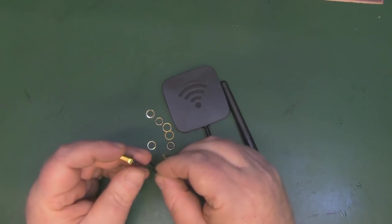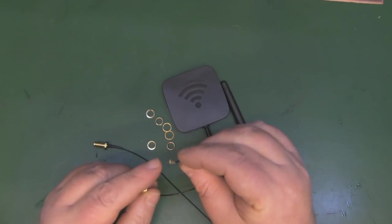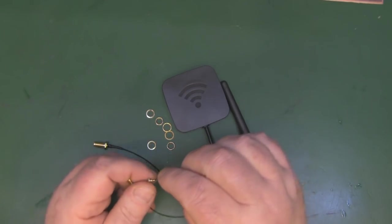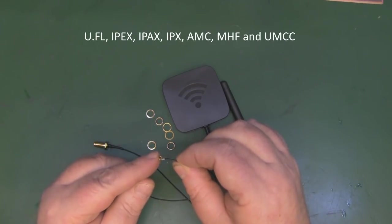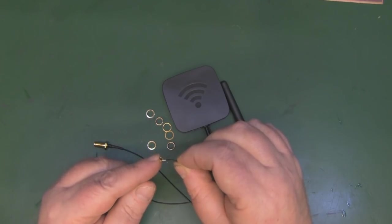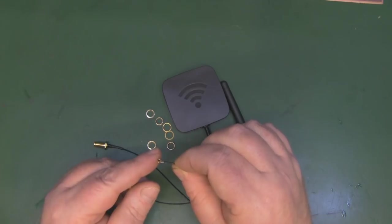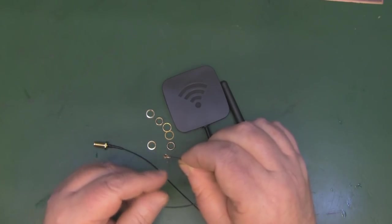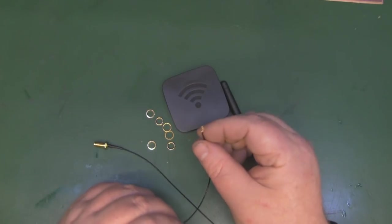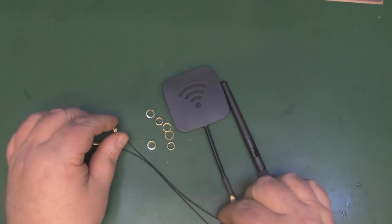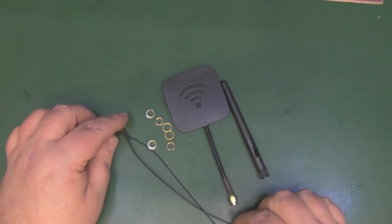This is called a Hirose connector. It goes by many different abbreviations but it's only designed for around 50 insertions. I wouldn't try to remove and connect it too many times. I've broken these on the first go, but normally because I've been too lazy to put my glasses on.